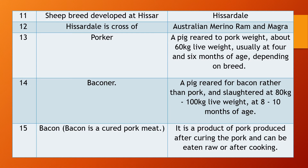Question 11. Sheep breed developed at Hisar. Important question. The name is Hisardale. Question 12. Hisardale is a cross of which breeds? Answer: Hisardale is the product of Australian Merino Ram and Magra breed of sheep.